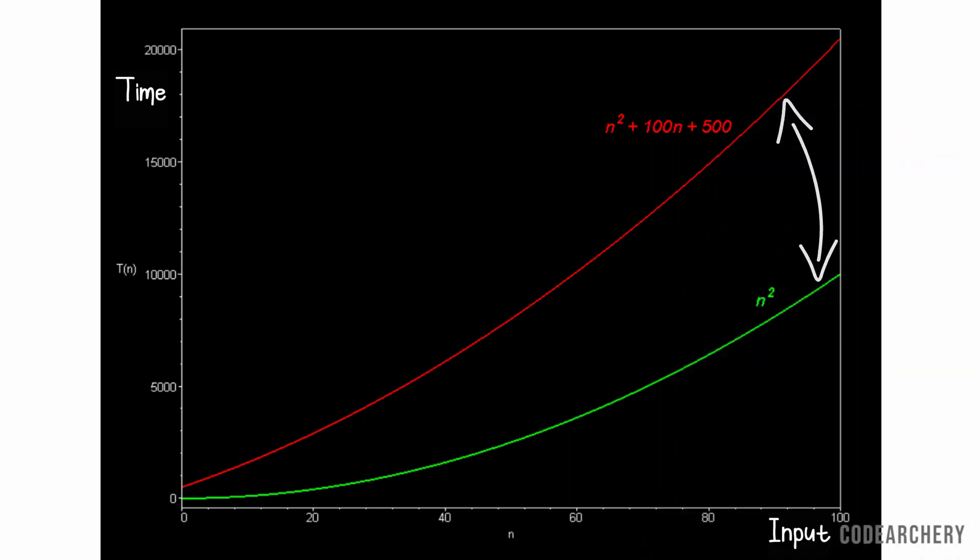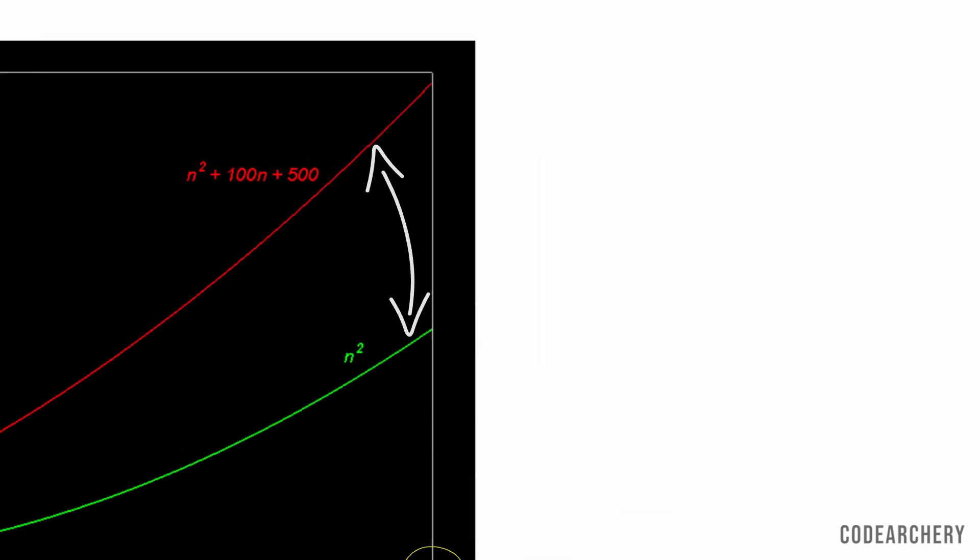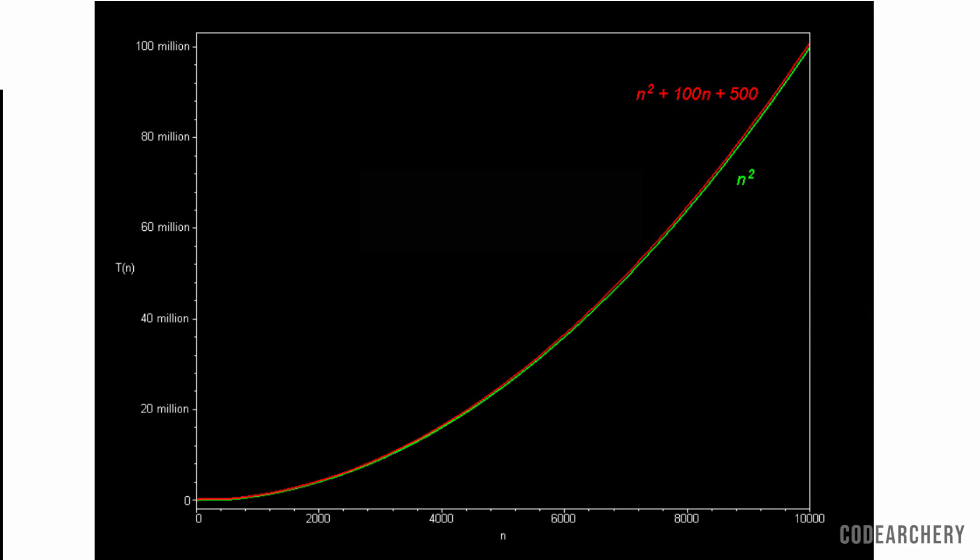Now, let's increase our input size. This graph has max input as 100. Let's see how our graph behaves for higher input. Now, you can observe, for higher inputs, our both graphs behave similar. Their behavior is same. Because these both are quadratic algorithms. I hope you have understood rule 1.